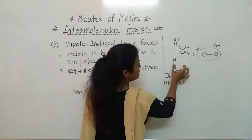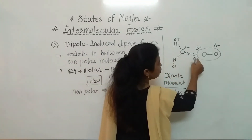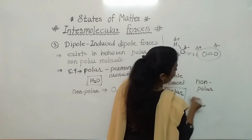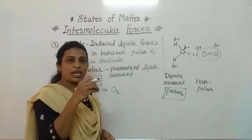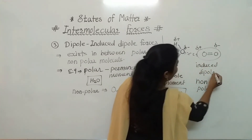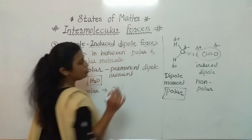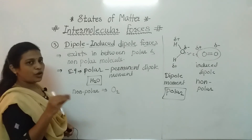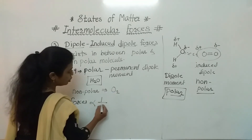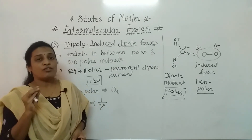When a polar molecule with a permanent dipole moment comes near a non-polar molecule, it induces a dipole in the non-polar molecule — that is called an induced dipole. The interaction between the polar and non-polar molecule is called dipole-induced dipole forces. Mathematically, these forces are also proportional to 1/R⁶.